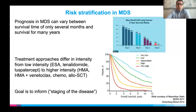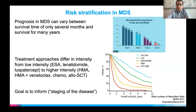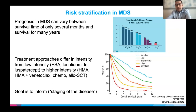A frequent question when someone is diagnosed with MDS is: what stage am I? In lung cancer, these different stages really matter, with five-year survival rates worsening progressively from stage one to stage four. Now, in MDS, we don't have a staging system — not stage one, two, three, or four — because the cells are already in the blood and have gone throughout your entire body. But we do have something similar called risk stratification, to understand how severe your disease is.